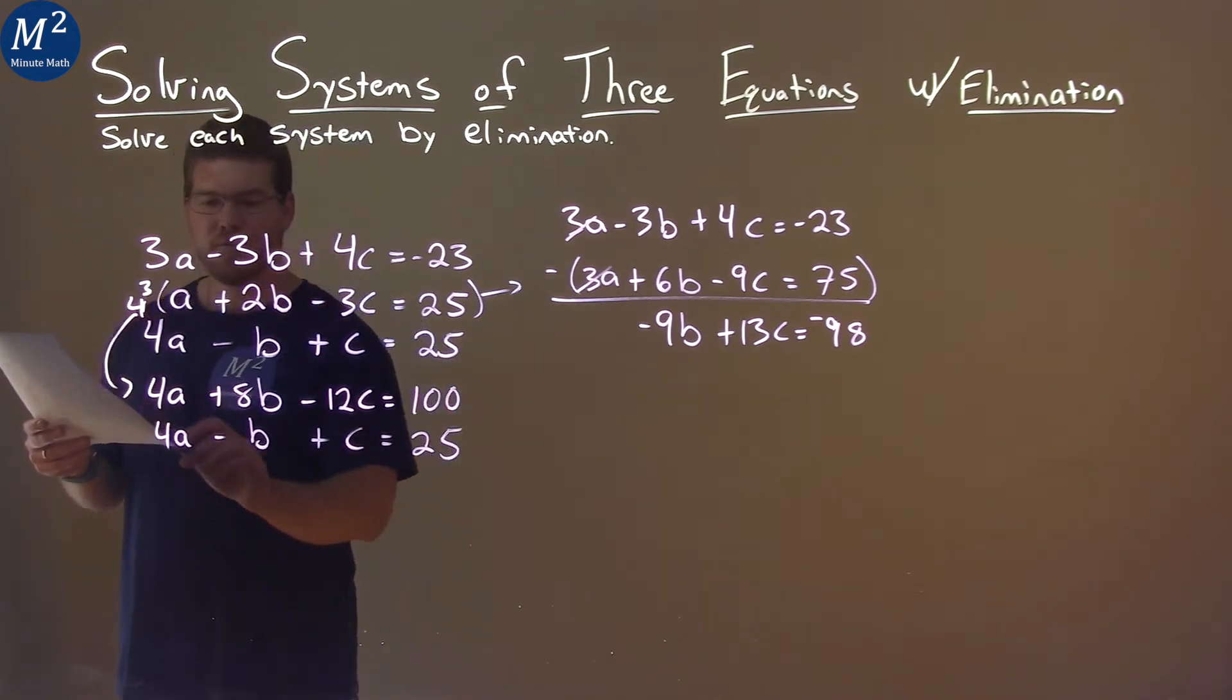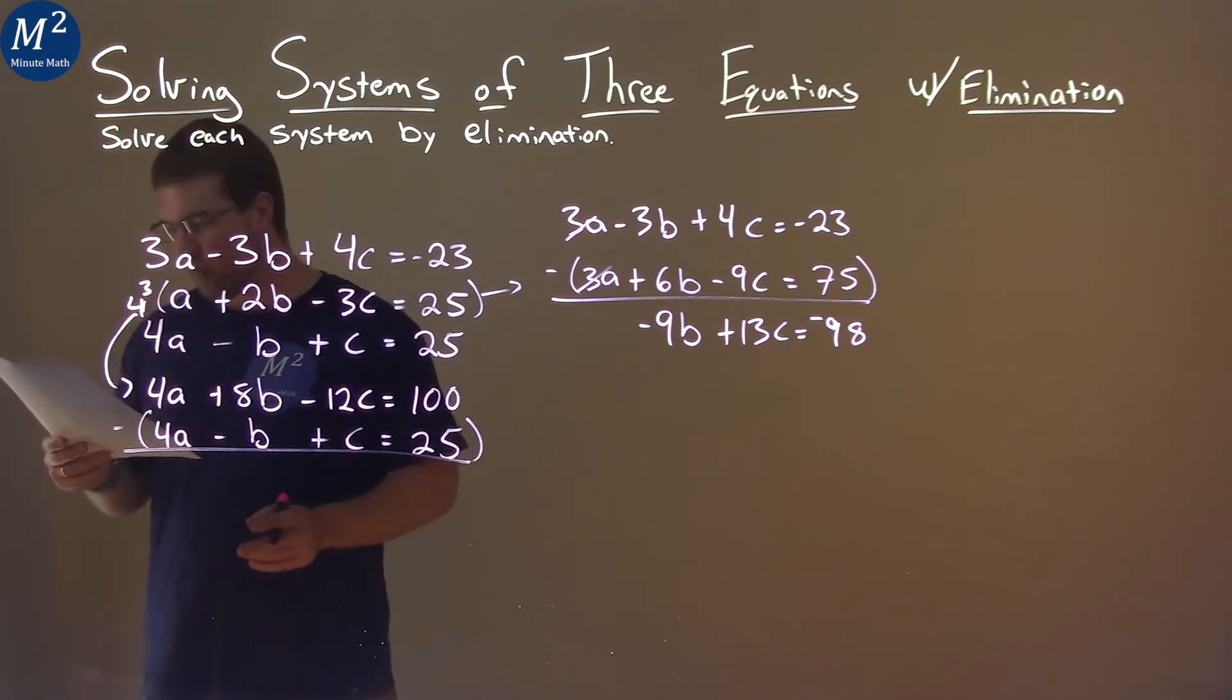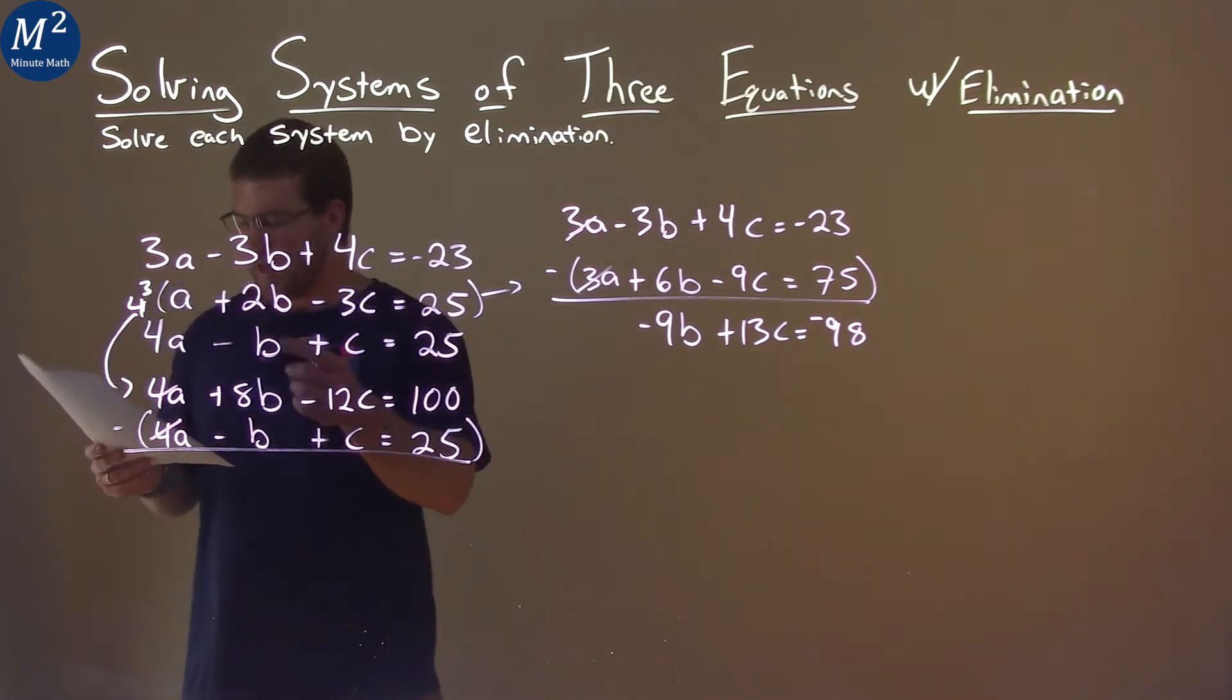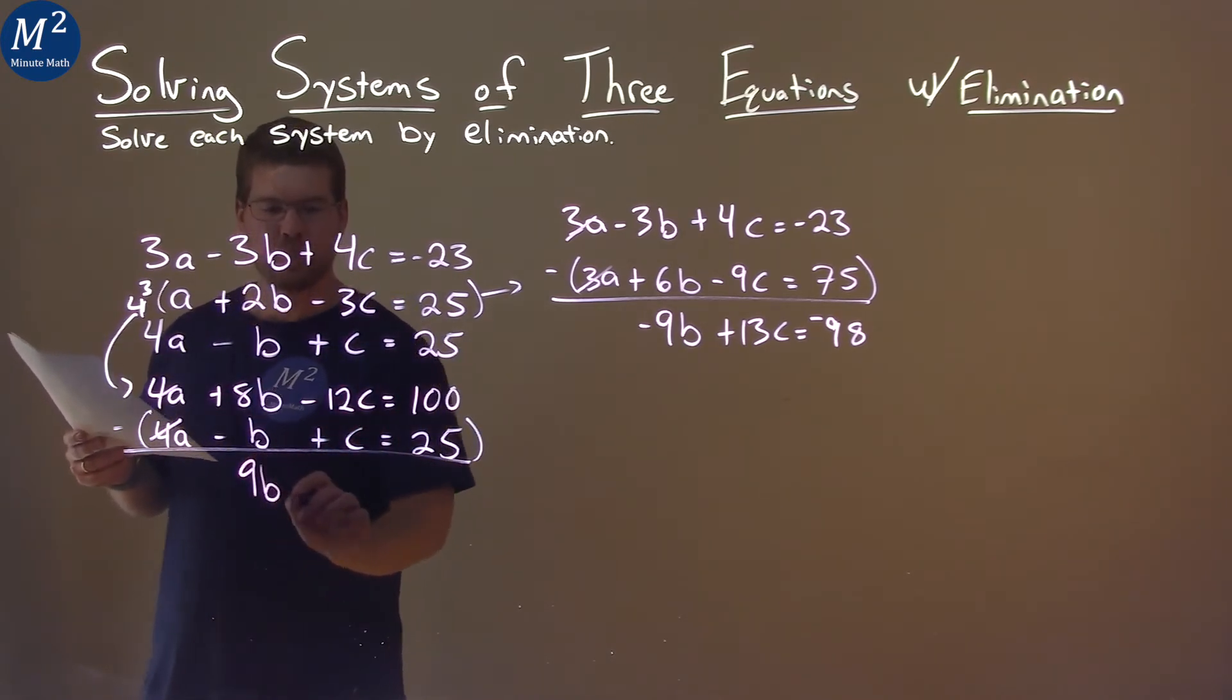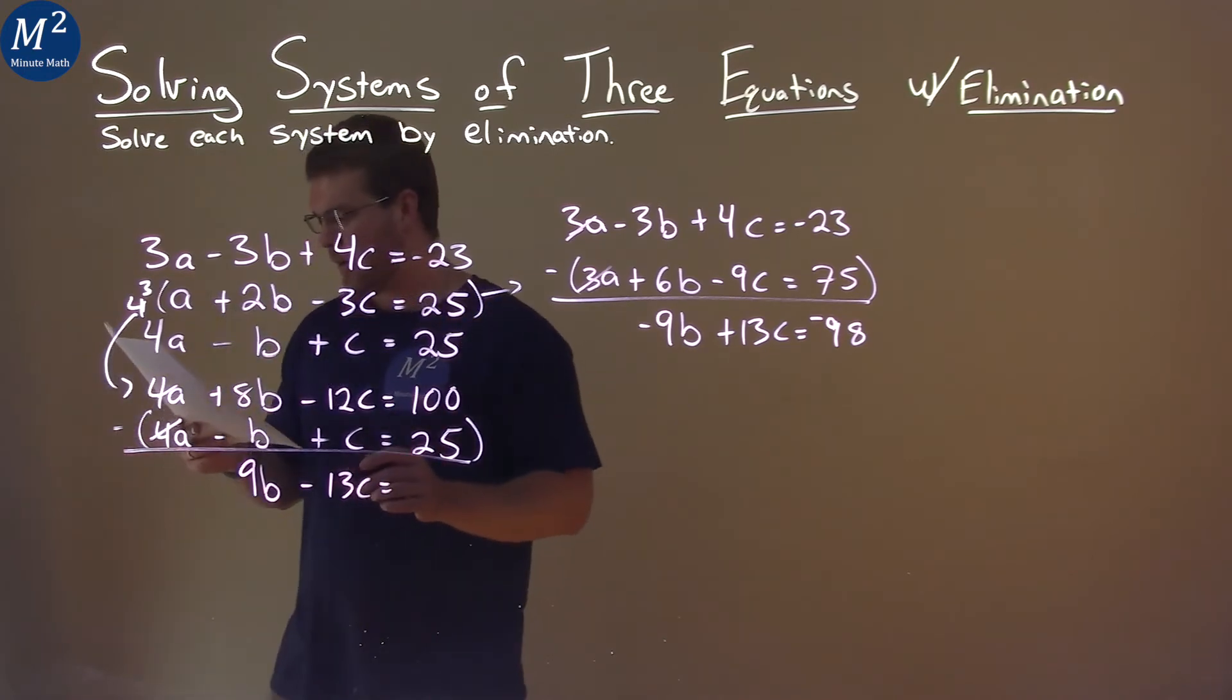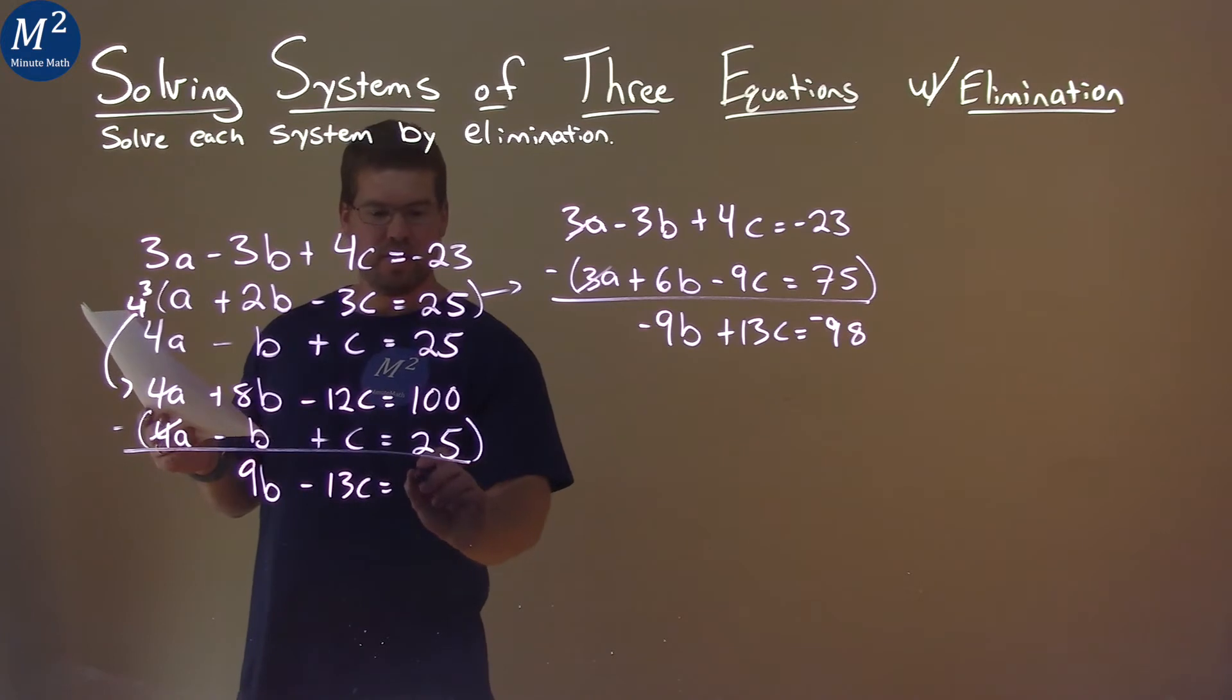And now we have to subtract the two equations. 4A minus 4A eliminates, zero, that's what we're going for. 8B minus negative B is like adding a positive B, and that's 9B. Negative 12C minus 1C is negative 13C, and that's equal to 100 minus 25, which is 75 here.